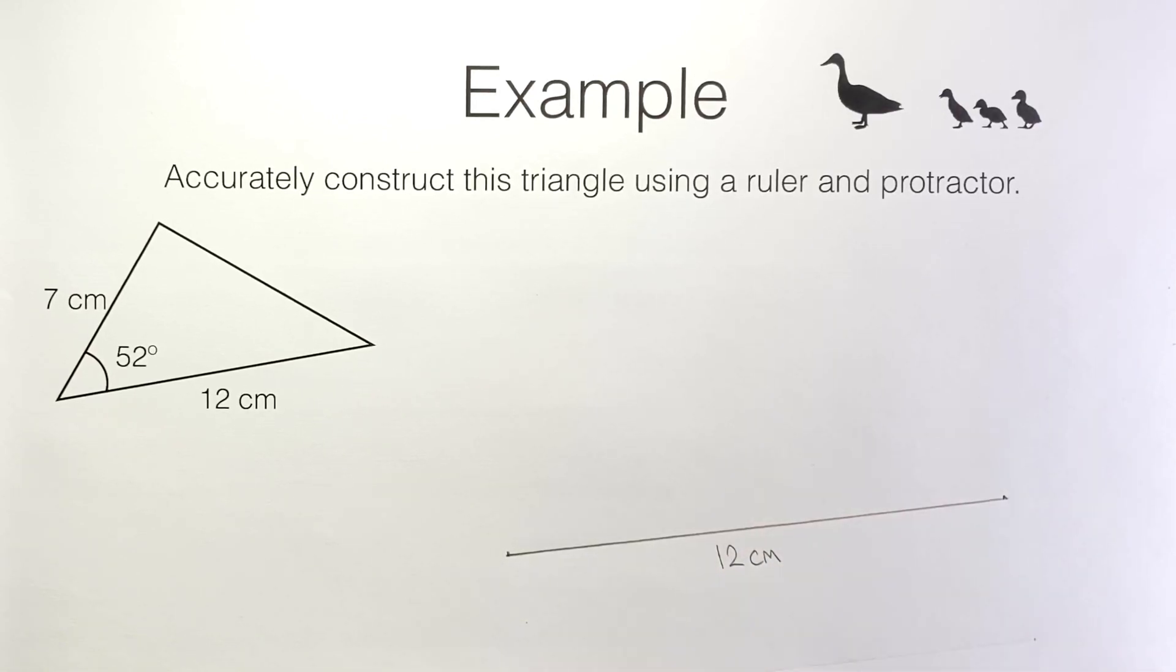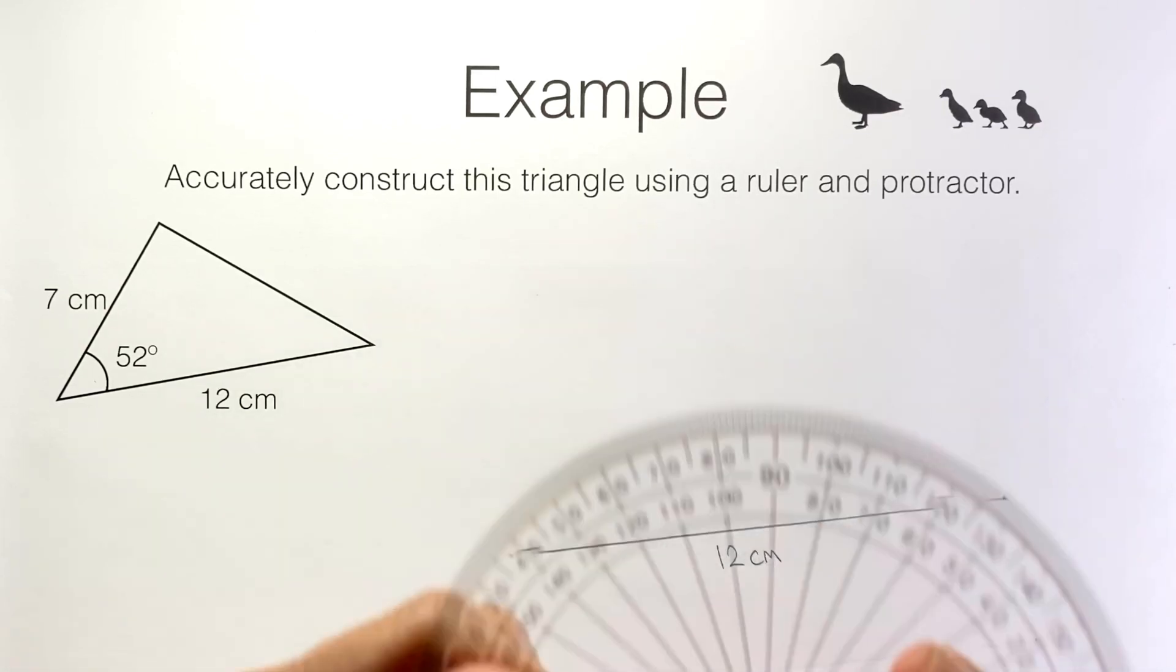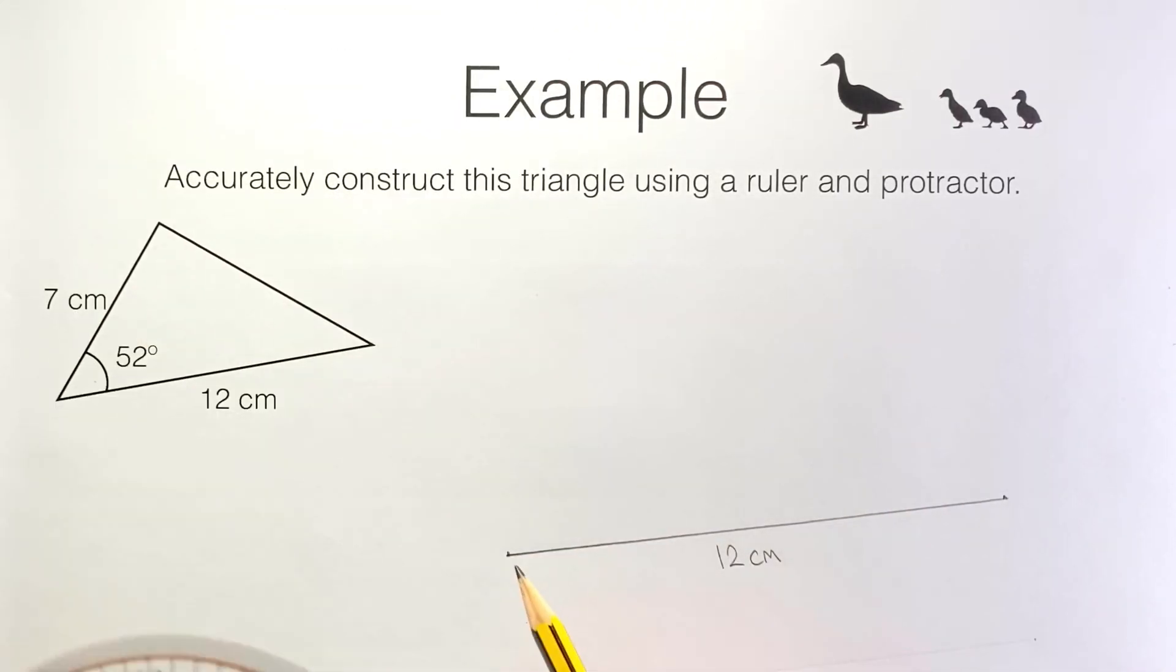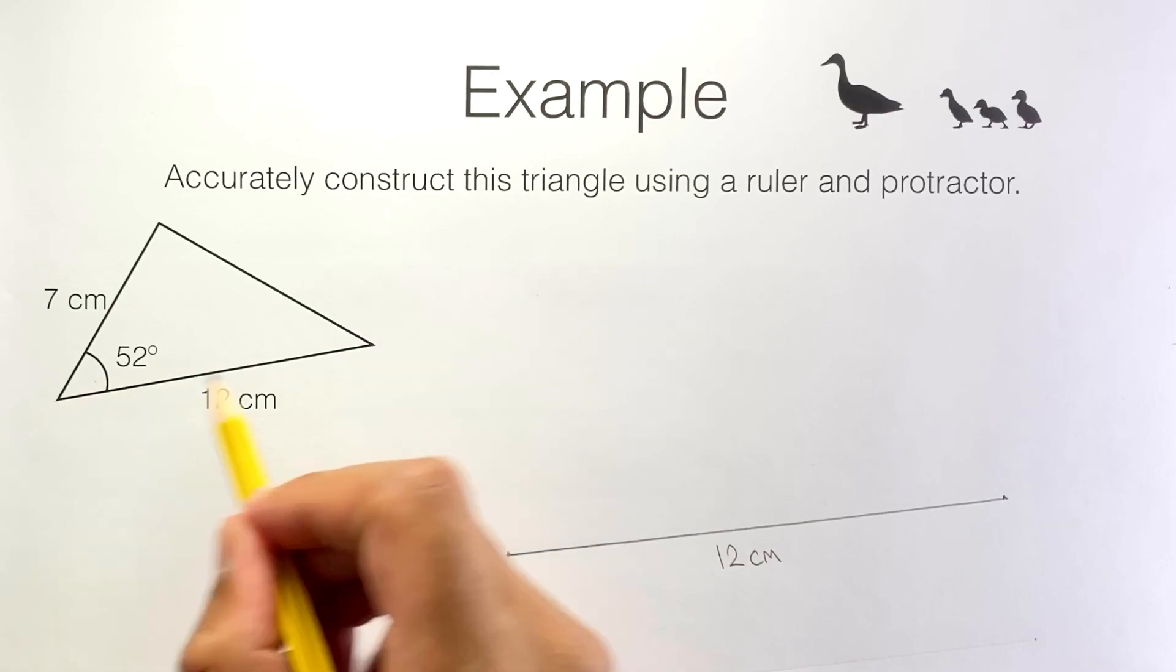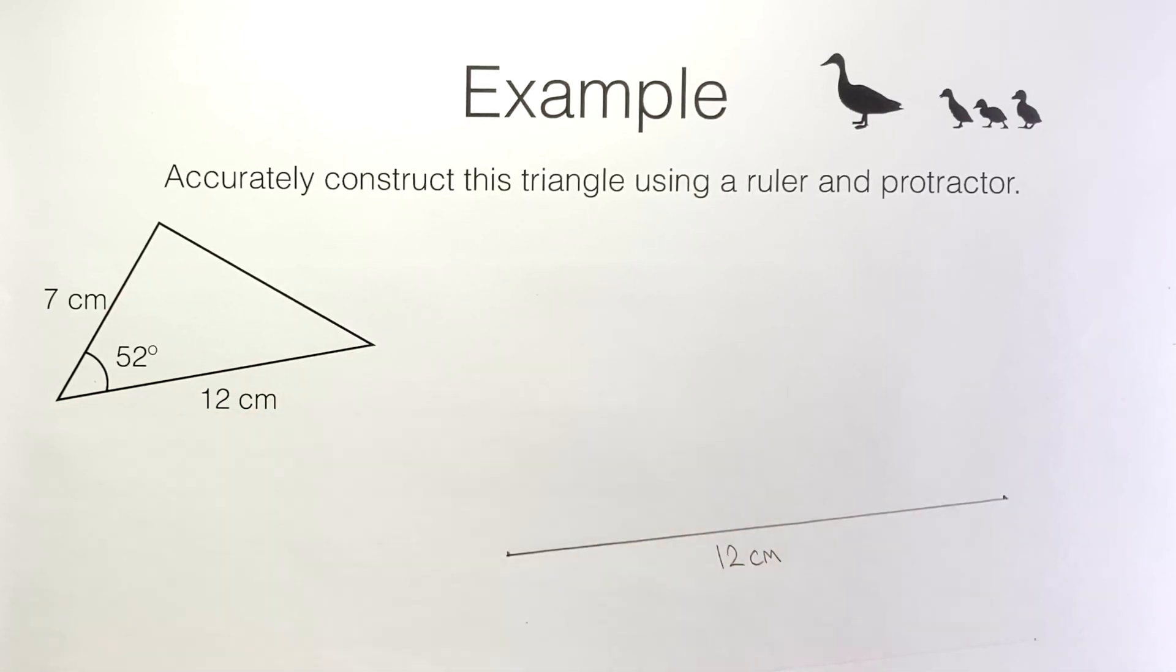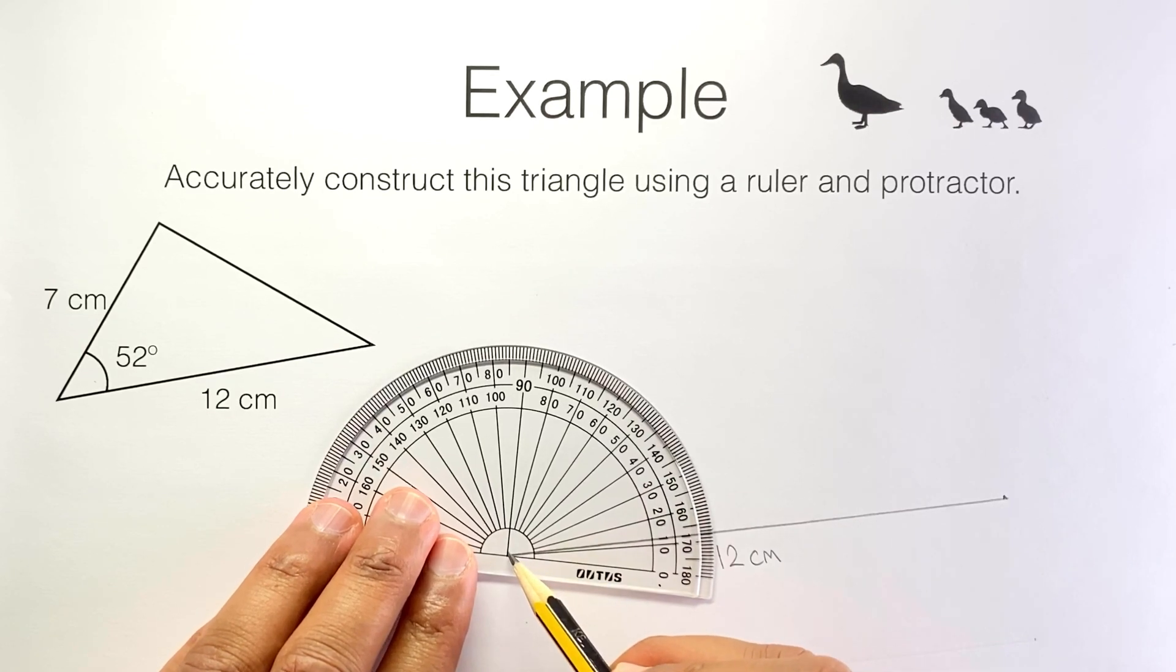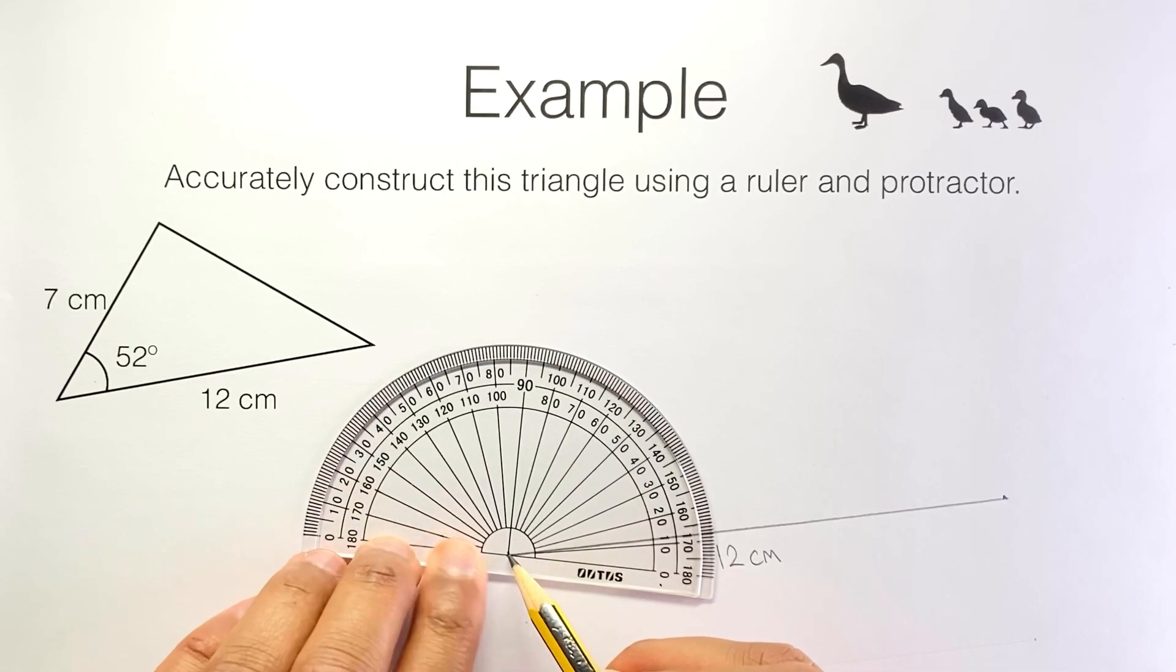Now I've drawn and labelled this side here. Next I need to mark out a 52 degree angle and I do this by positioning my protractor so this point on the protractor will be right here. It's at the left hand end of the 12 centimetre line. So I've got the point there at the centre of the protractor in the correct position.